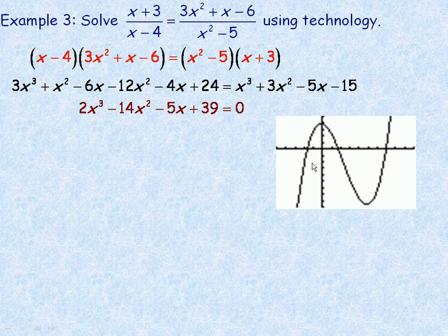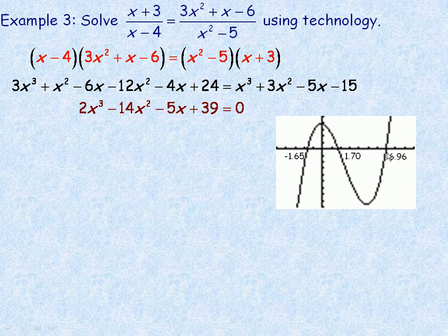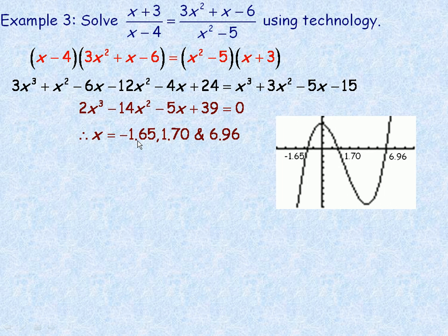This does not factor, so we're going to graph it using a graphing calculator. Using the zoom or root function, there's a root at approximately negative 1.65, one at approximately 1.70, and a third one just below 7 at approximately 6.96. So the three solutions are approximately x equals negative 1.65, 1.70, and 6.96.